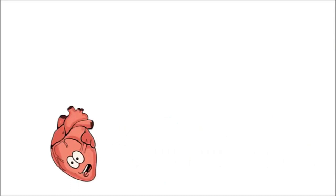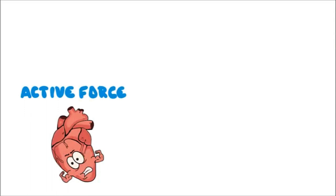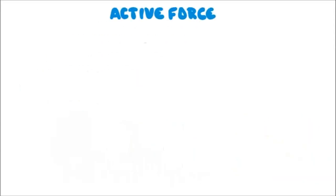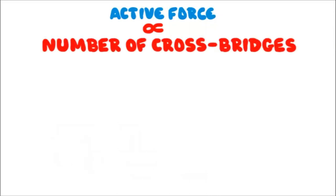When a heart muscle contracts, it generates an active force — in other words, an active tension. The amount of blood pumped during contraction, the stroke volume, depends on the overall force of contraction. An active force generated by the heart muscle during systole is directly proportional to the number of cross bridges cycling in that muscle. The more cross bridges that cycle, the greater the force of contraction.